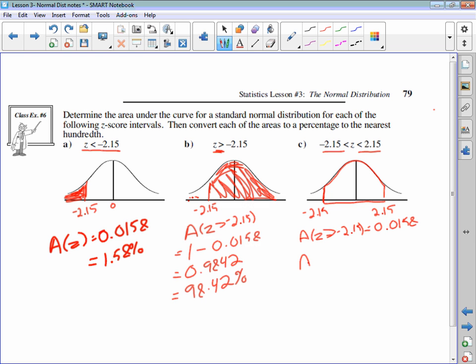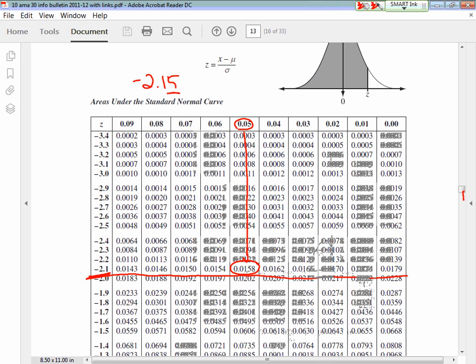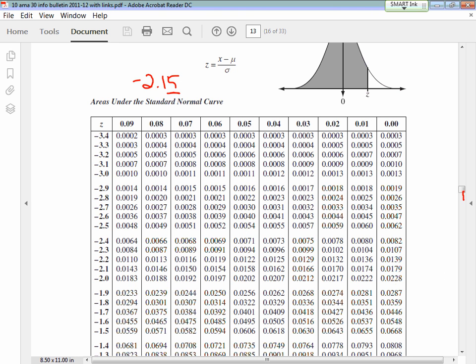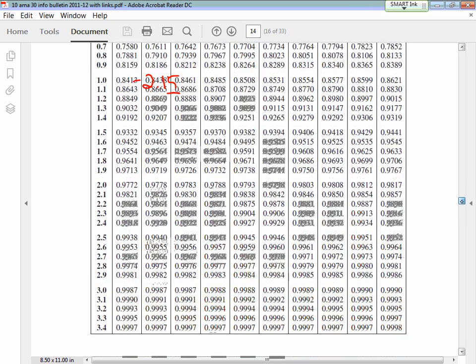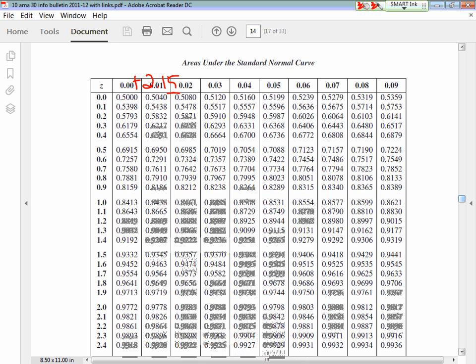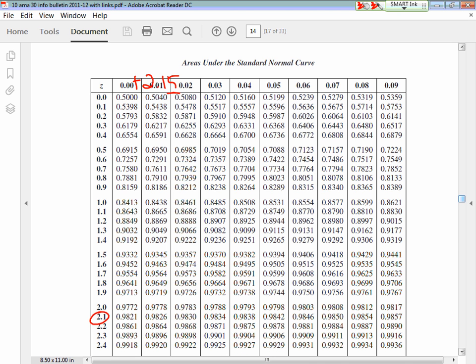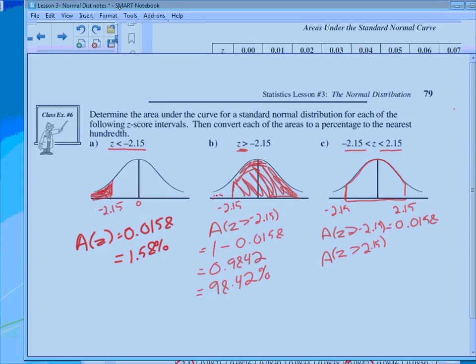Now we need to figure out the area of z is less than positive 2.15. For that, we go back to our tables. Now I'm looking for positive 2.15. The positive one is almost exactly the same. So here's 2.1 and 2.15. Trace it down, trace it over, 0.9842. That means that 98.42% of the data is less than 2.15.